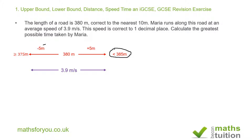Similarly for the speed, correct to one decimal place. For the upper extreme we add 0.05 meters per second, giving less than 3.95 meters per second — because the actual value would be 3.94999... near 3.95 but not quite. At the other extreme, 3.9 minus 0.05 gives a lower bound of greater than or equal to 3.85 meters per second.